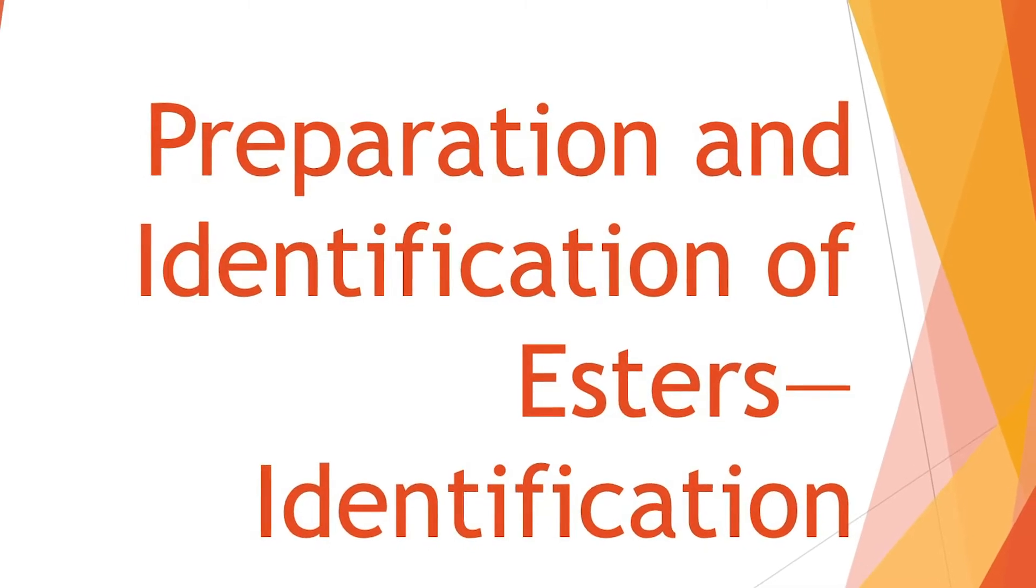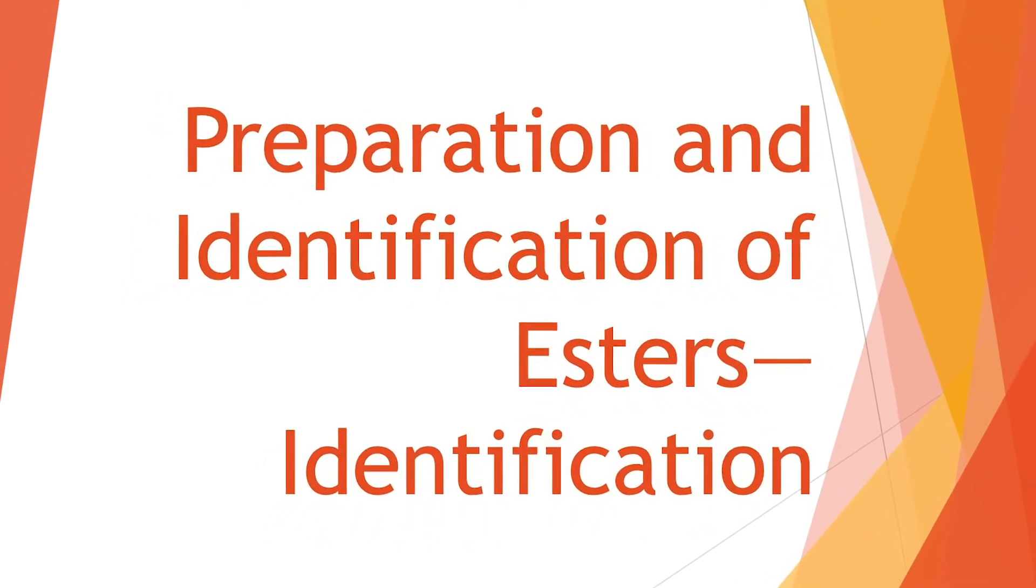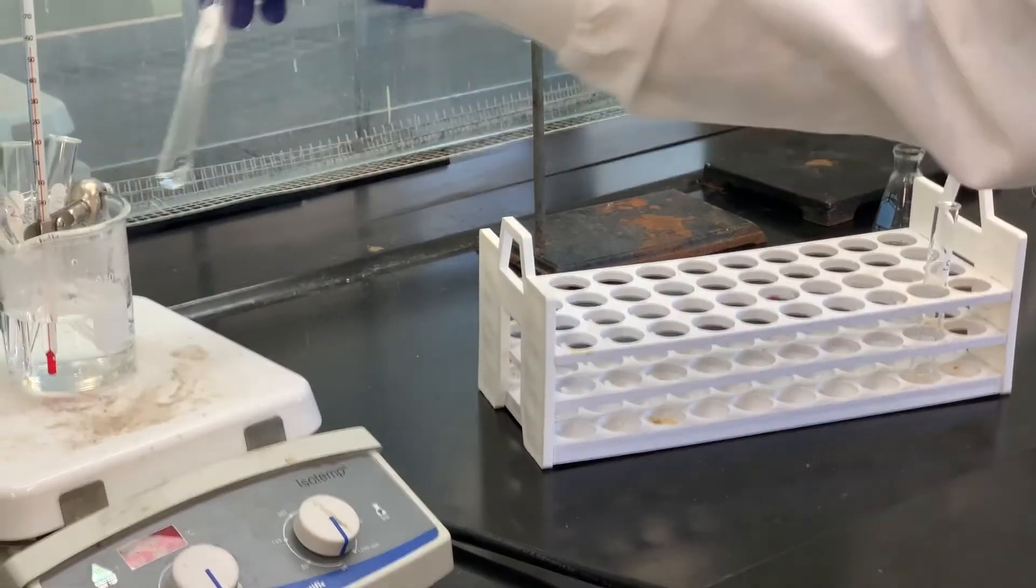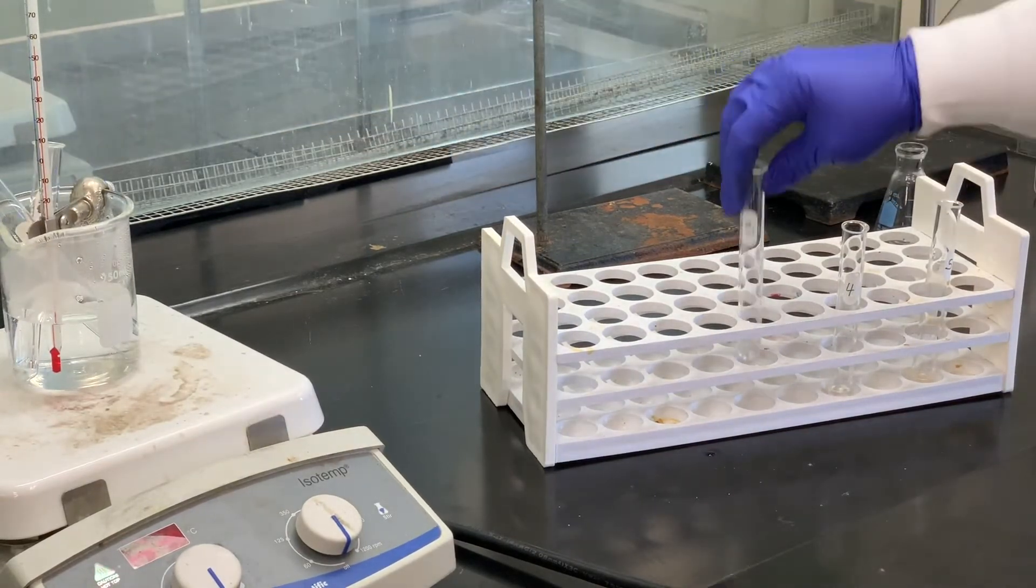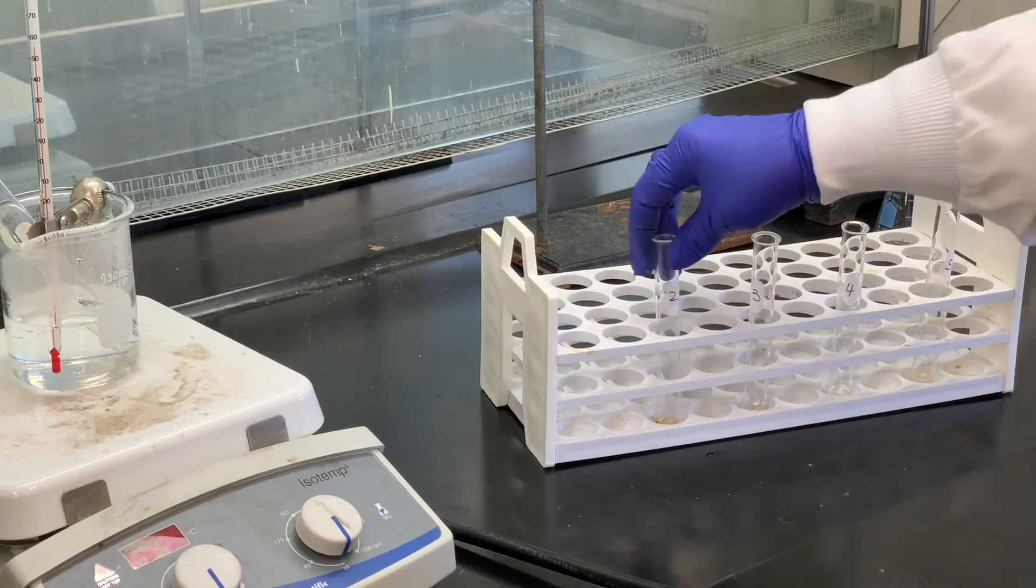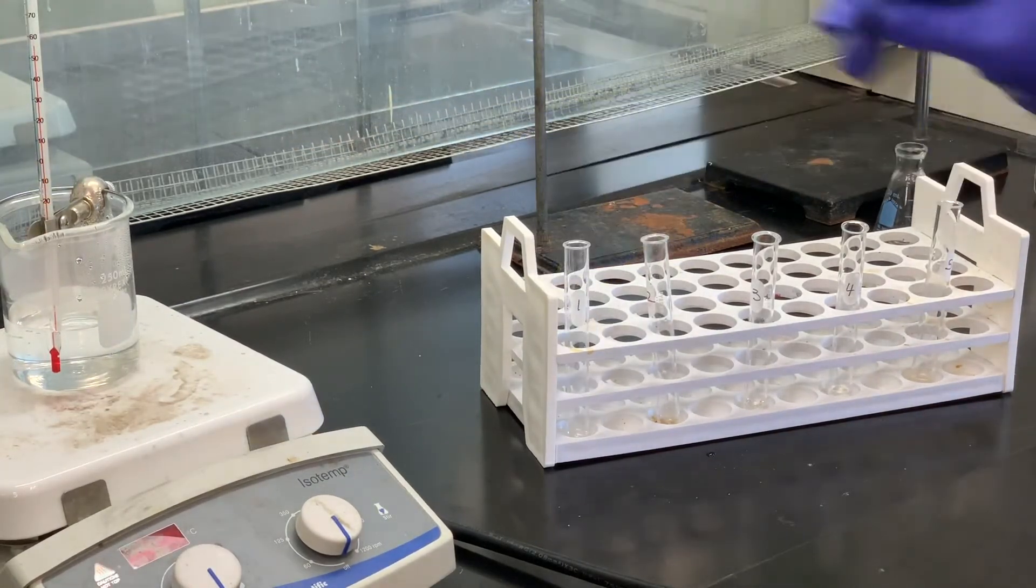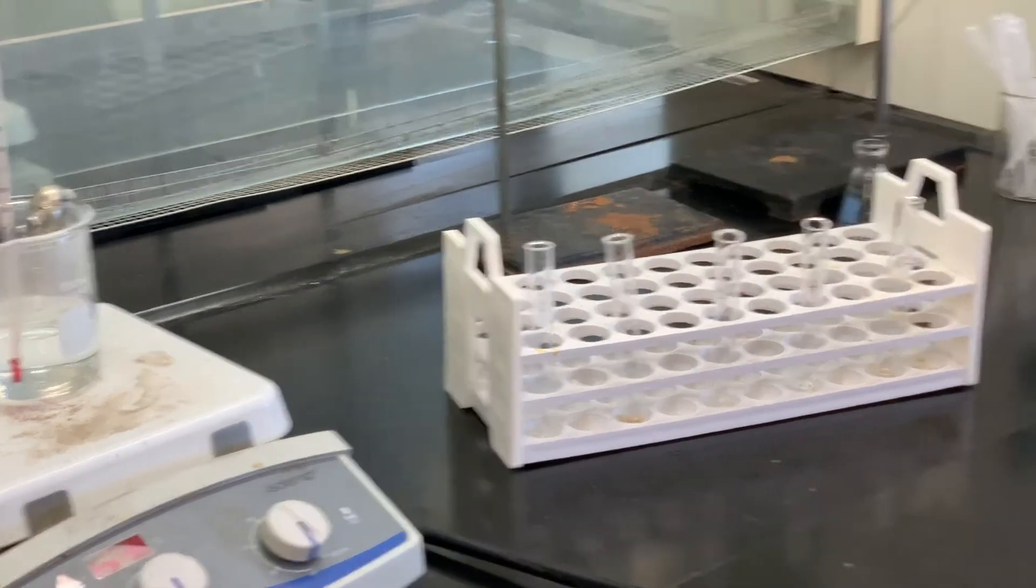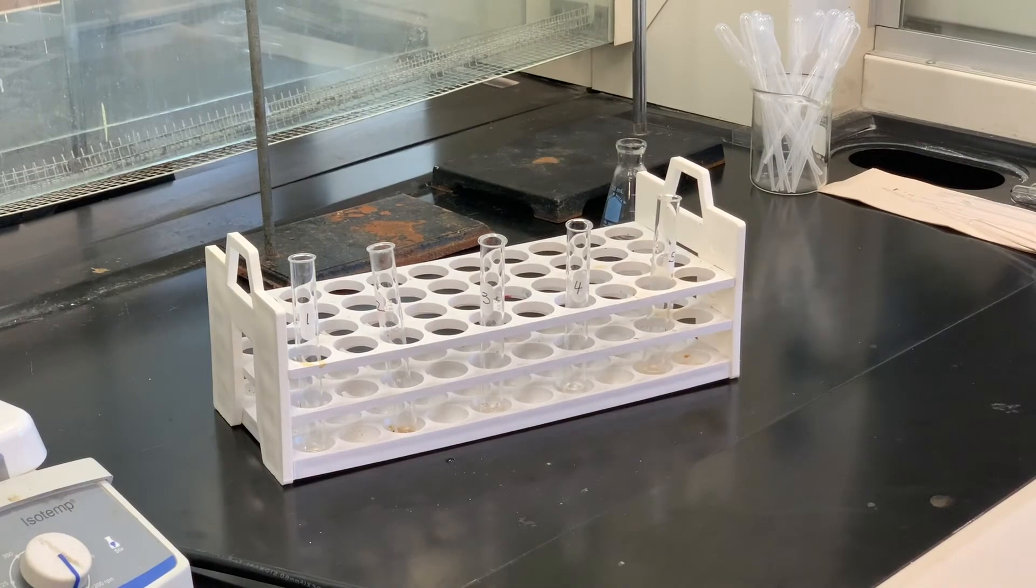It's been 10 minutes at around that 60, 65 degree range. So what we're going to do now is just take these test tubes out and let them sit, just cool for a couple minutes. And then we'll go back and we'll add some water to this. We should get two layers to form. And then what I'd like to do is we'll isolate the organic layer, which should be on the top for the esters. And then we will take a note of what the odor is that we smell coming from those esters.